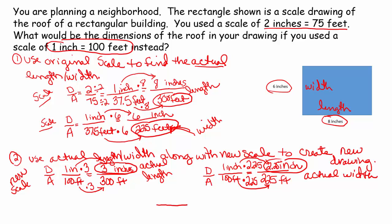You're going to see that the new drawing will be a similar rectangle to the drawing we started with, except it's going to be smaller — 3 inches instead of 8 inches, by 2.25 inches instead of 6 inches. We've just shrunk it down a bit more. Maybe you need it to fit more items on your scale drawing of your neighborhood, so you're shrinking everything down to fit on the page. Let's try another example.